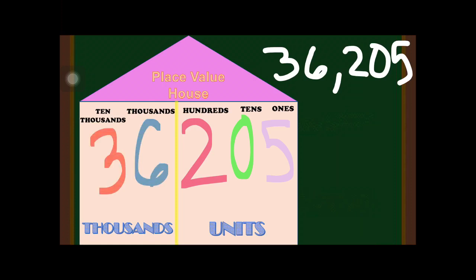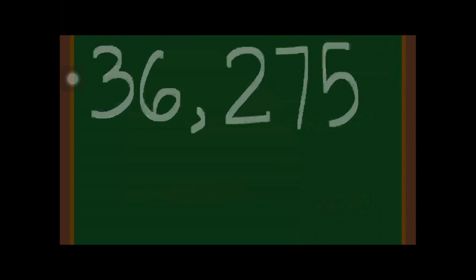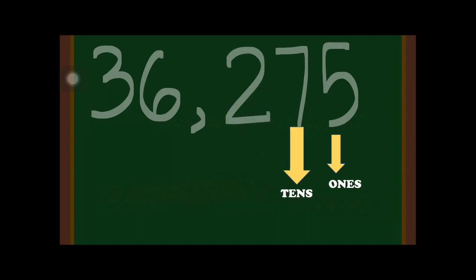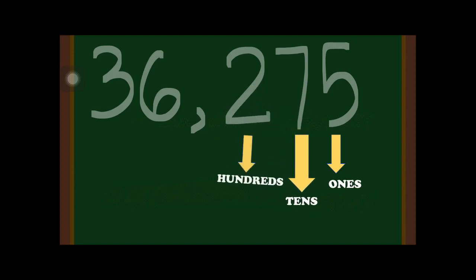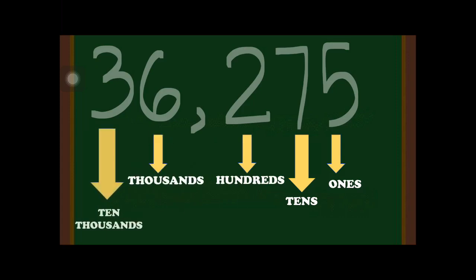For the third example, we have 36,275. Again, we start from right to left. The first digit from the right is digit 5, which is in the ones place. Digit 7 is in the tens place. Digit 2 is in the hundreds place. Digit 6 is in the thousands place, and digit 3 is in the ten thousands place.